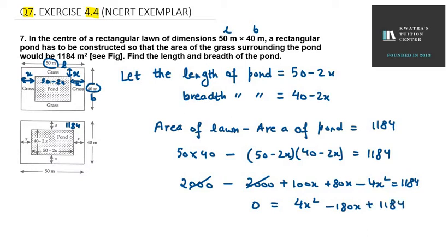Then we have plus 1184. So this is my equation. Now what we can do is, we can take 4 common out of this. As all are multiples of 4, so we can take common 4. So 0 here.